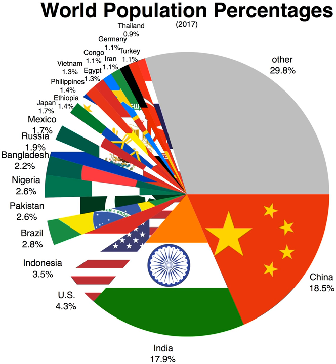This is a list of countries and dependent territories by population. It includes sovereign states, inhabited dependent territories and, in some cases, constituent countries of sovereign states, with inclusion within the list being primarily based on the ISO standard ISO 3166-1.